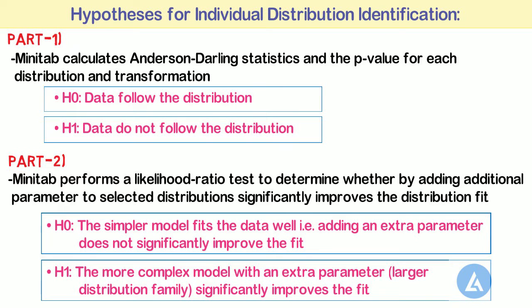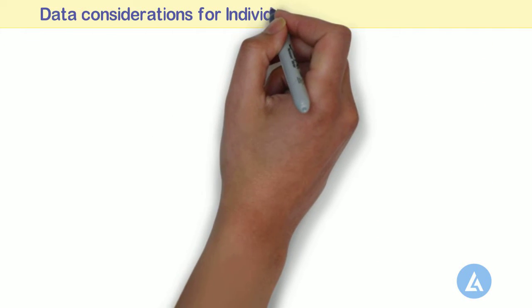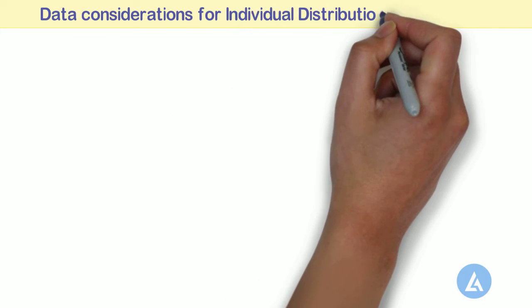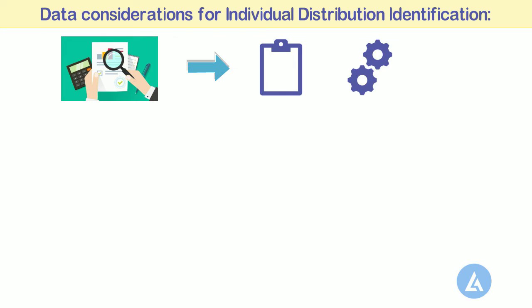Although it seems somewhat difficult, don't worry — it is very simple to understand once we see it with the help of a practical example. For data considerations in Individual Distribution Identification, to ensure that your results are valid, consider the following guidelines when you collect the data, perform the analysis, and interpret your results.